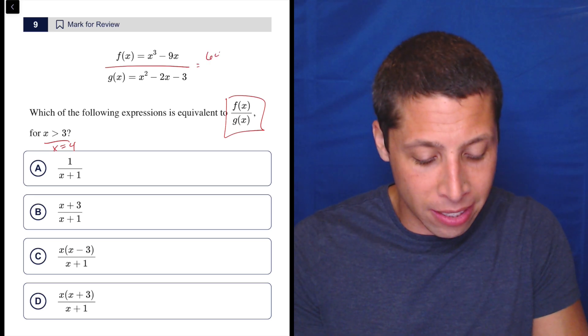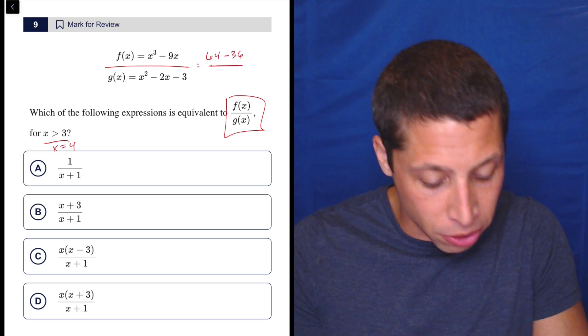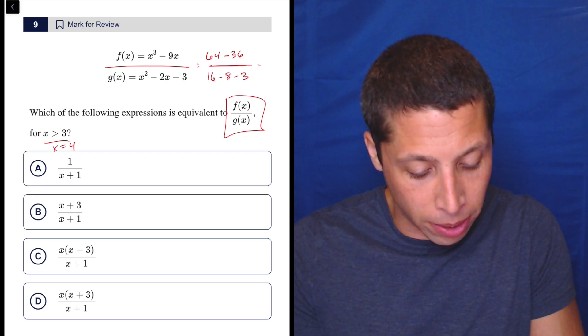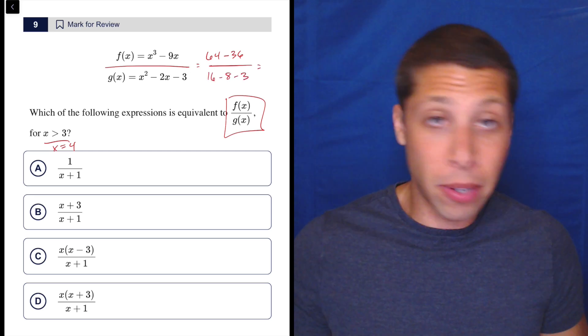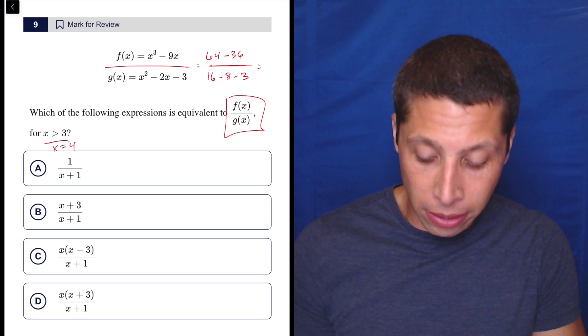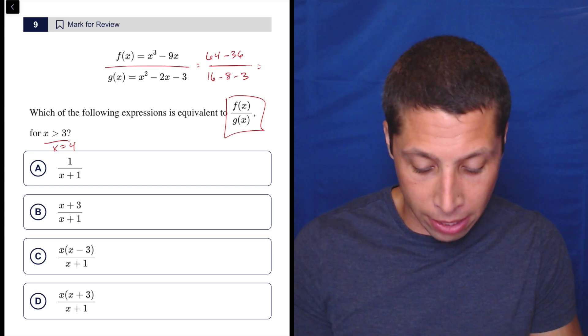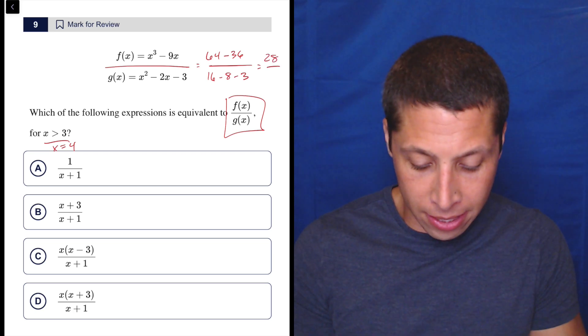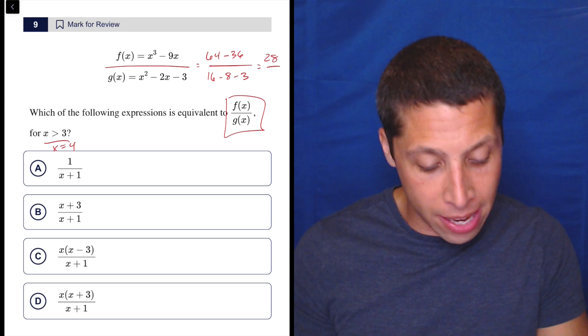So four cubed, you might need to enter that in the calculator, but that's 64. So 64 minus 36, nine times four. Then we have 16 minus eight minus three. So at this point I would get my regular calculator just because I'm a little nervous about doing subtraction in my head. So 64 minus 36 is 28 and 16 minus eight minus three is five.